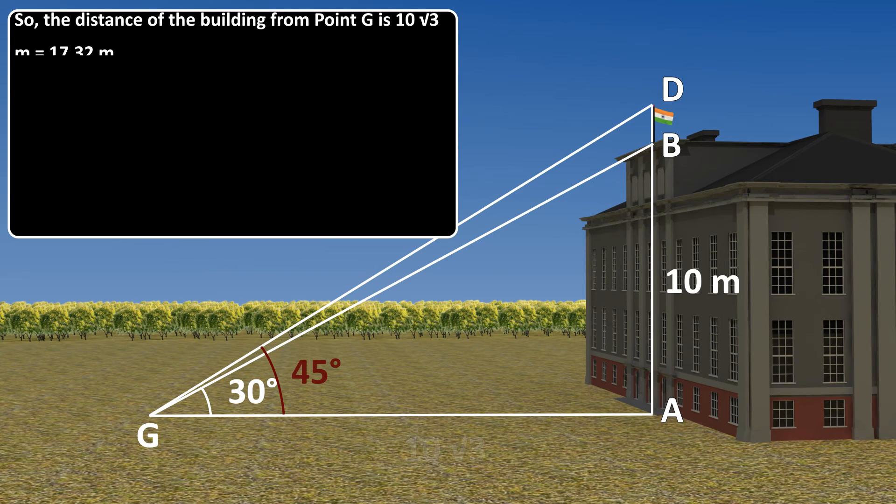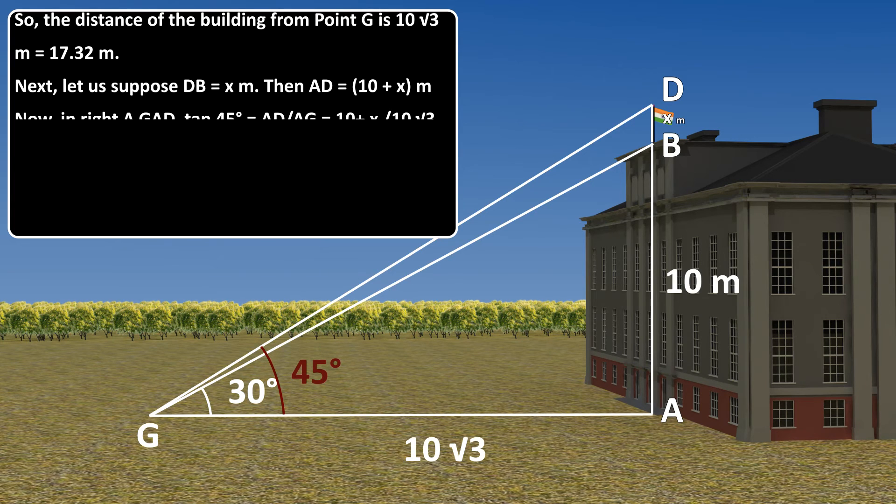Next, let us suppose DB is equal to X meters. Then, AD is equal to 10 plus X meters. Now, in right triangle GAD tan 45 degrees is equal to AD by AG which is equal to 10 plus X by 10 square root 3.